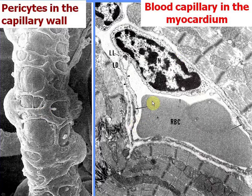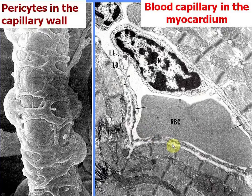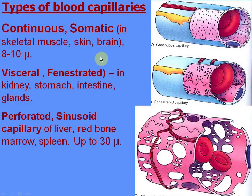This section and transmission electron microscopy of the myocardium shows a lumen with a red blood cell — this is a capillary with thin cytoplasm. There are three types of blood capillaries: continuous or somatic capillaries found in skeletal muscle, skin, and brain — they are the most numerous in the body with diameter up to 10 microns, and only one erythrocyte can be inside at the same time.